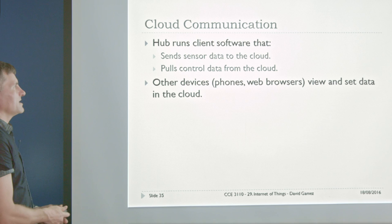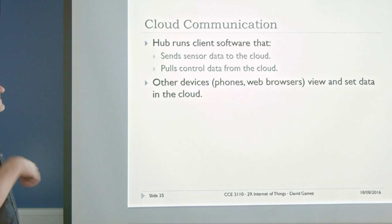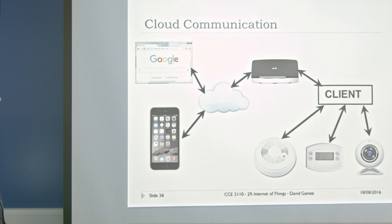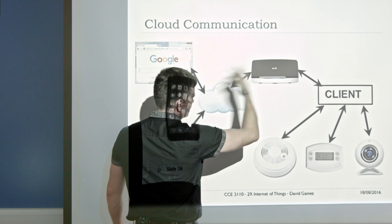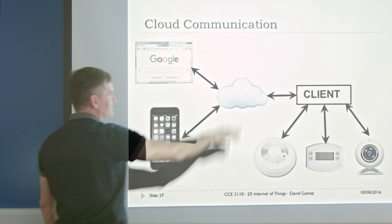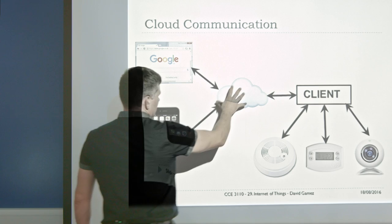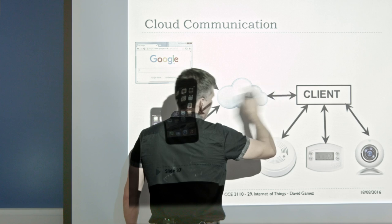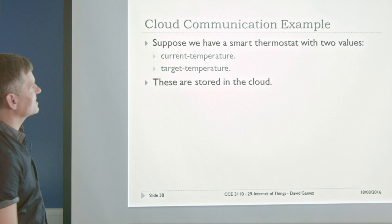The way Nest does this — and how I'd build a commercial system — is using cloud communication. Instead of having a server in the hub, you have a client in the hub, and the hub sends sensor data to the cloud and pulls control data from the cloud. Other devices such as phones and web browsers view and set data in the cloud. In this model, we don't need to worry about the router since we're only making outgoing connections. We've got a data structure in the cloud — the client modifies this with information from devices, and the phone or browser changes the data structure, and the client reads these changes and adjusts devices accordingly.